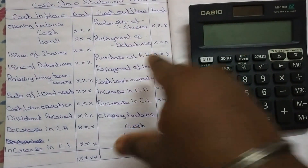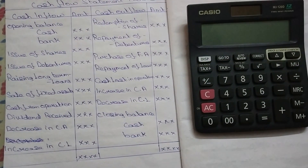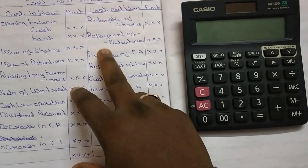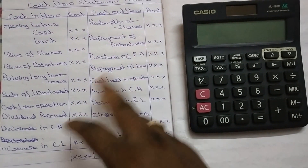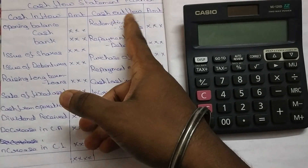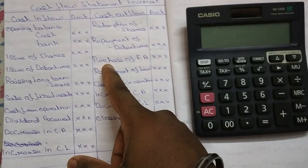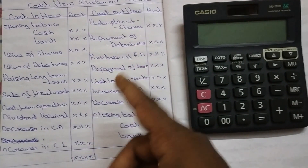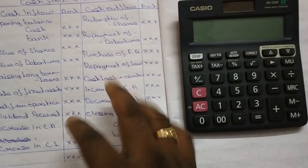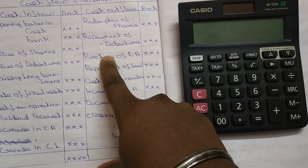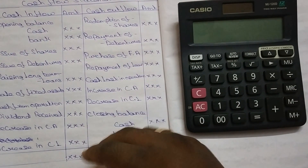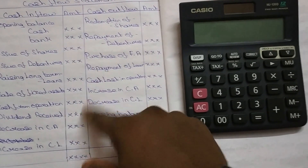That is the redemption of shares. If we did the redemption of shares, if we paid the redemption money, we would get the cash outflow. We would get the repayment of debentures. Purchase of fixed assets — purchase means cash goes out, so we have the cash outflow. That is the repayment of loan. Loan interest repayment — we have the cash outflow.